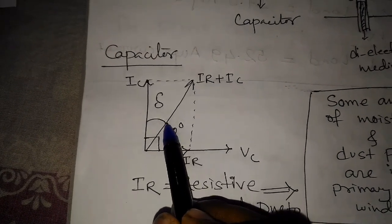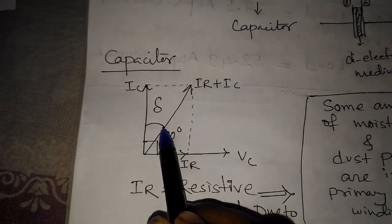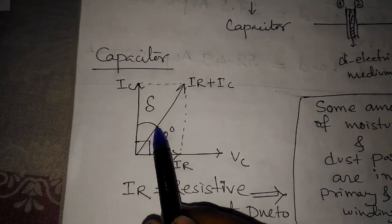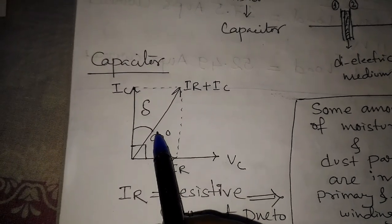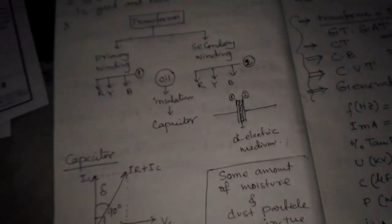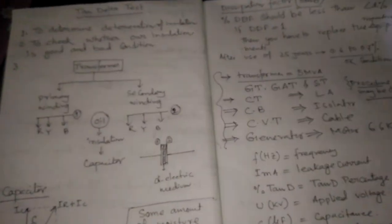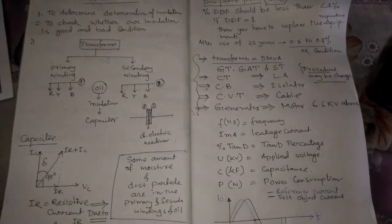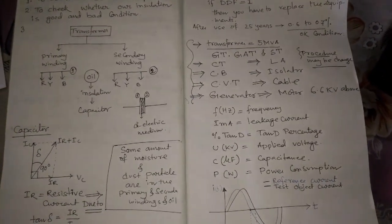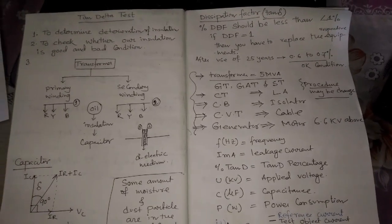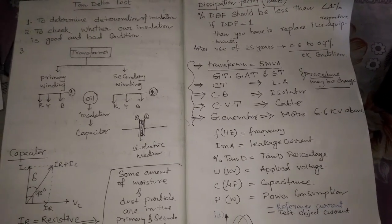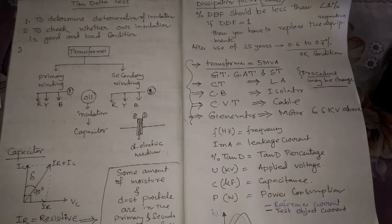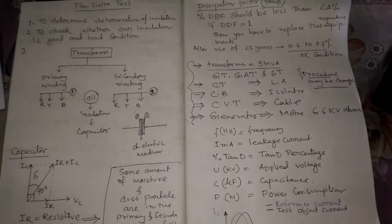The Tan Delta value should be less than 1% for better use of the equipment. If the value is greater than 1%, you have to replace the material accordingly. Today we discussed the Tan Delta test and the necessity of the Tan Delta test. If you are interested, please subscribe to the channel and press the bell icon for more updates. Thank you friends.